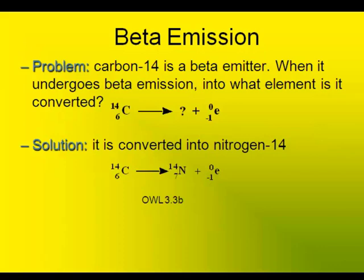With beta emission, a radioactive nucleus emits an electron. So carbon-14 becomes nitrogen-14, and in the process emits a beta particle.